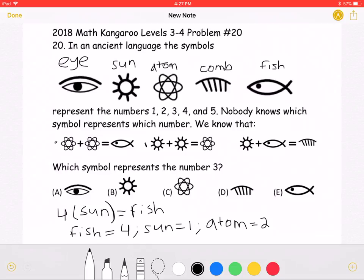Now let's go back to the last equation. We found out that the Sun is equal to 1, and the fish is equal to 4, so the comb must be equal to 5.